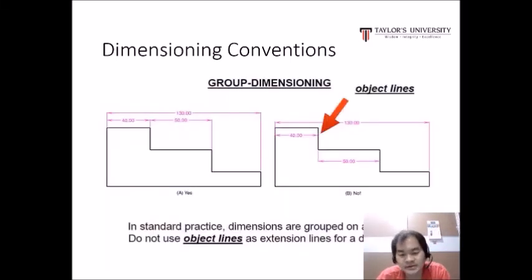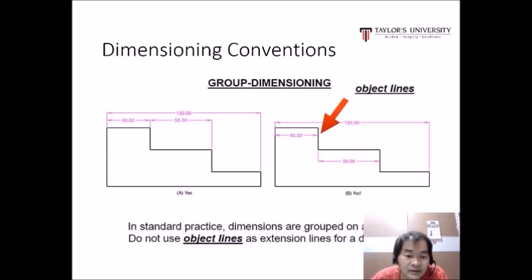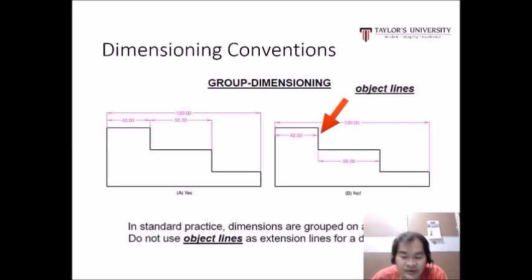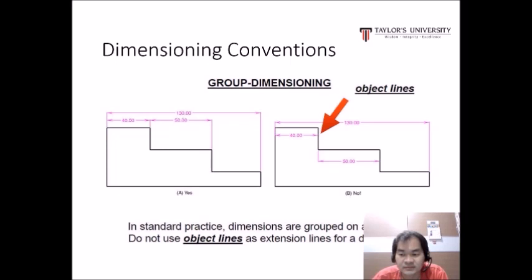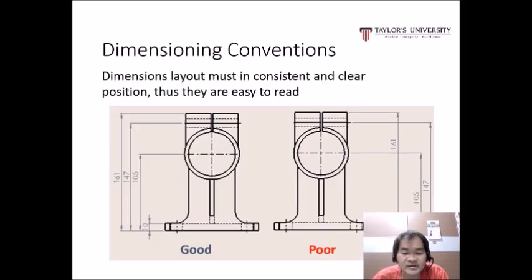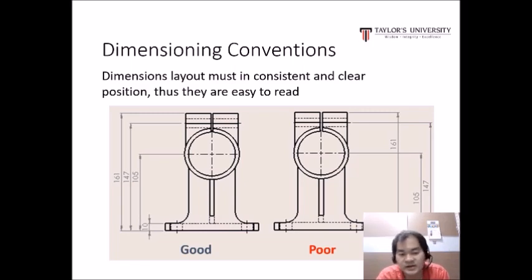For group dimensioning, in standard practice dimensions are grouped on the drawing. Do not use object lines as extension lines for dimensions, as shown in the left figure. All the dimensions should be on the same side. In the right figure, one dimension is placed at the bottom and another on the top, which is not consistent. A good dimension layout, as shown in the left figure, groups dimensions on one side so they are easy to read.